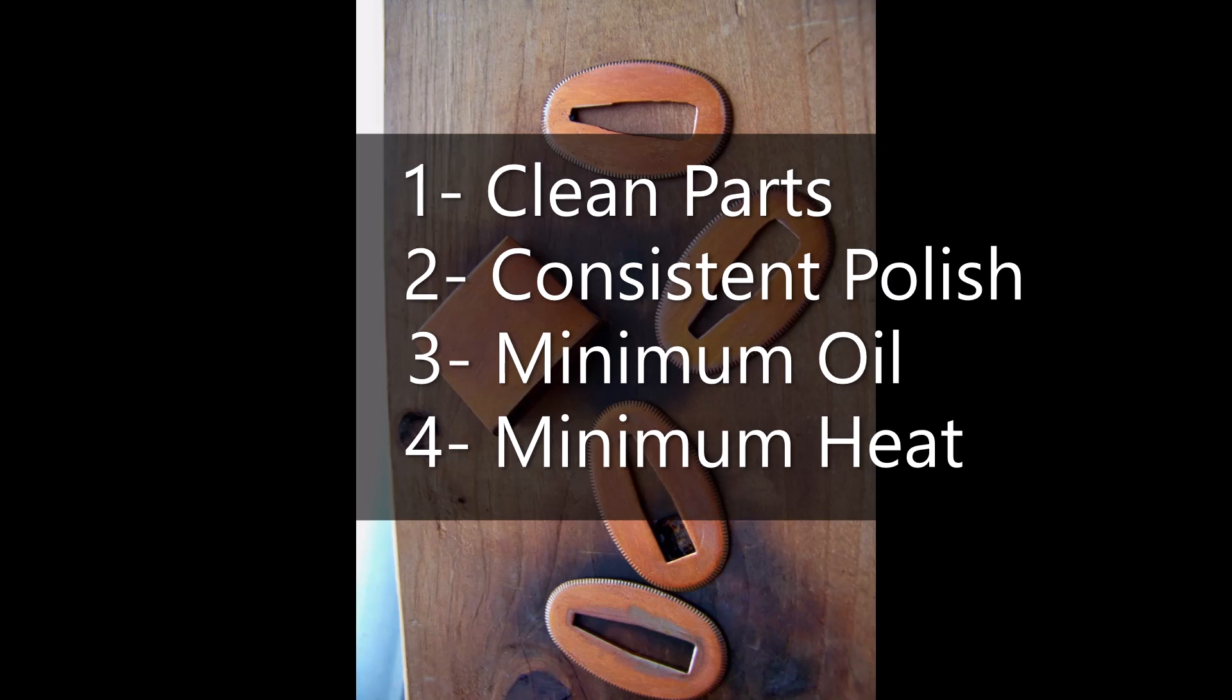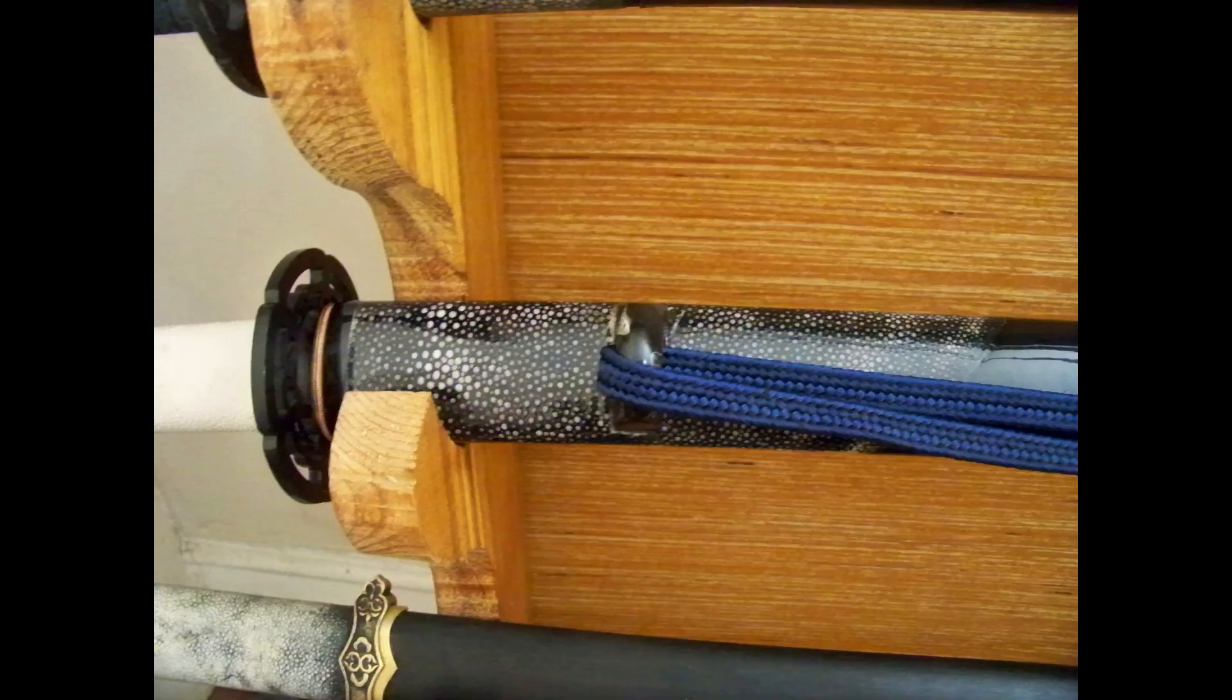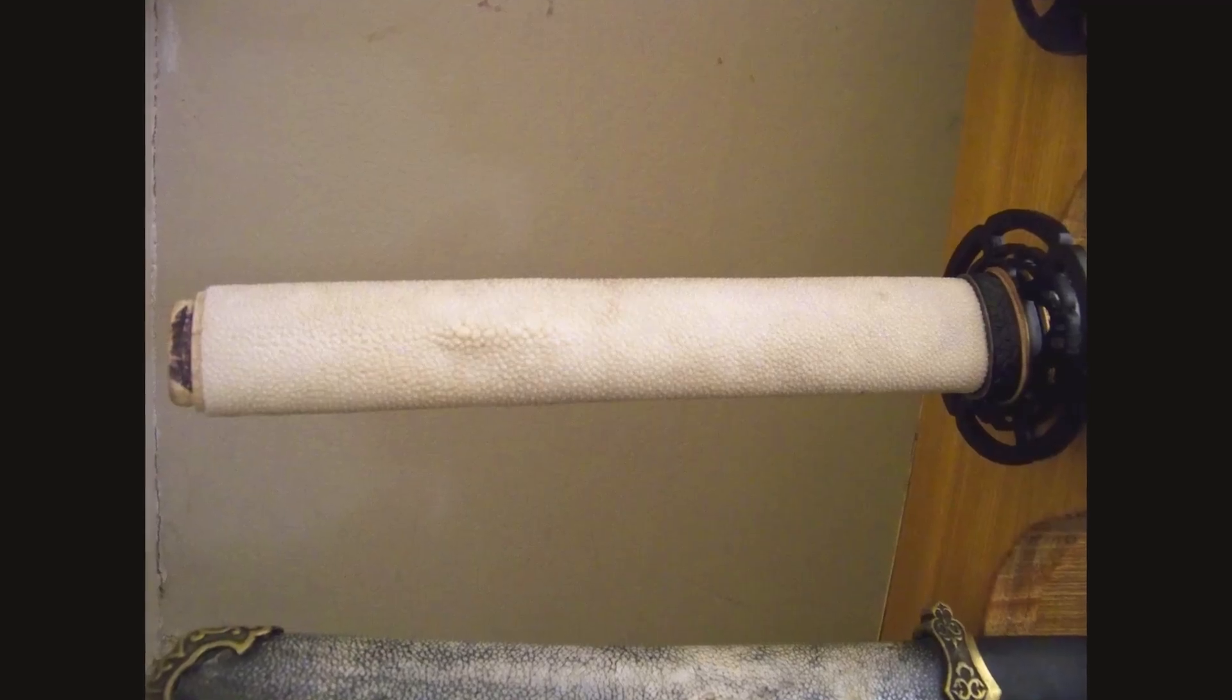The third is to use minimum oil and the fourth is to use minimum heat where like the edges of my sepa look a little bit more silvery because they got too much heat but this is a pretty cool project.